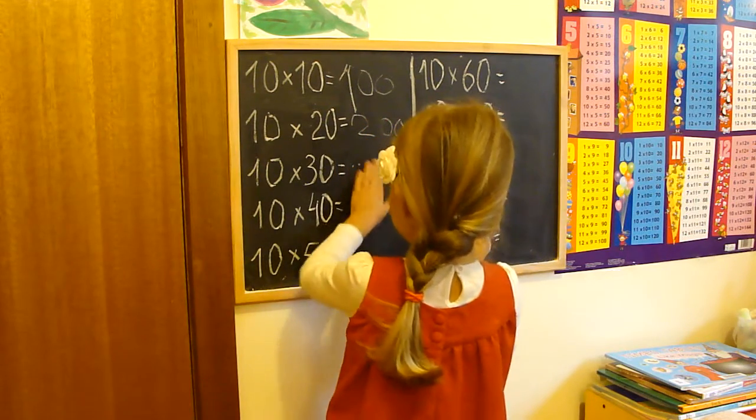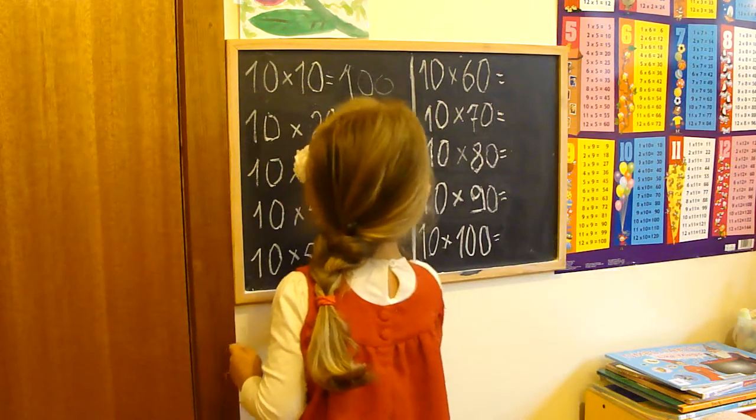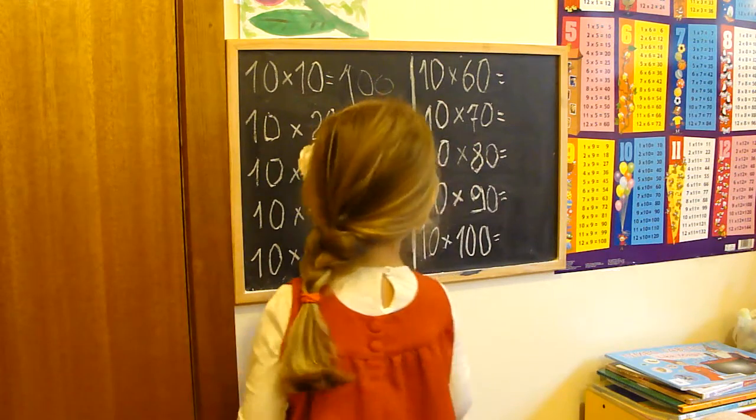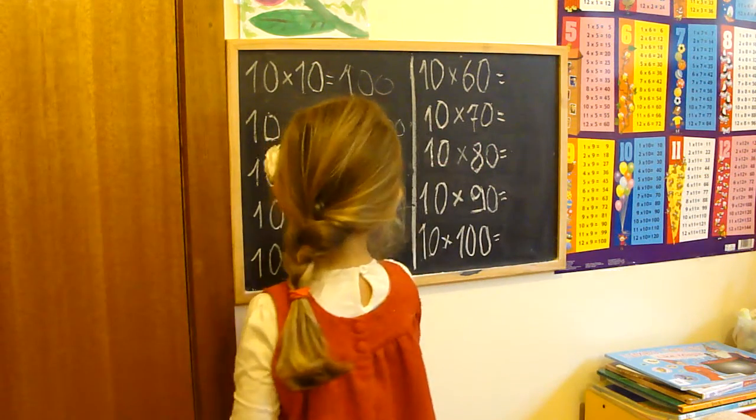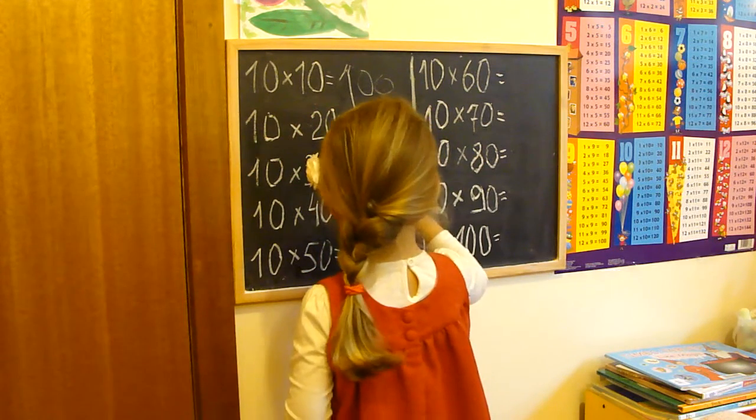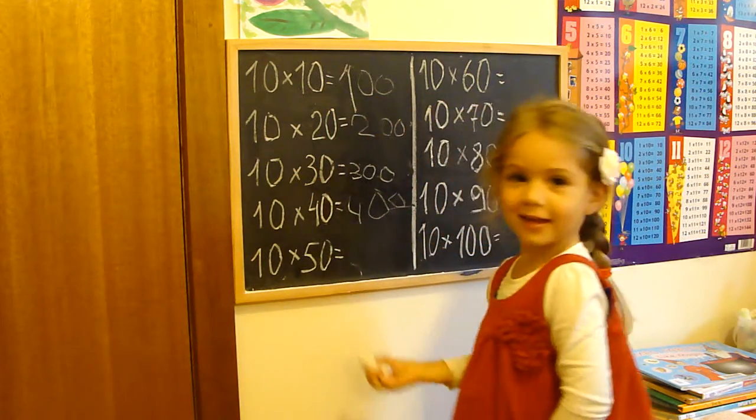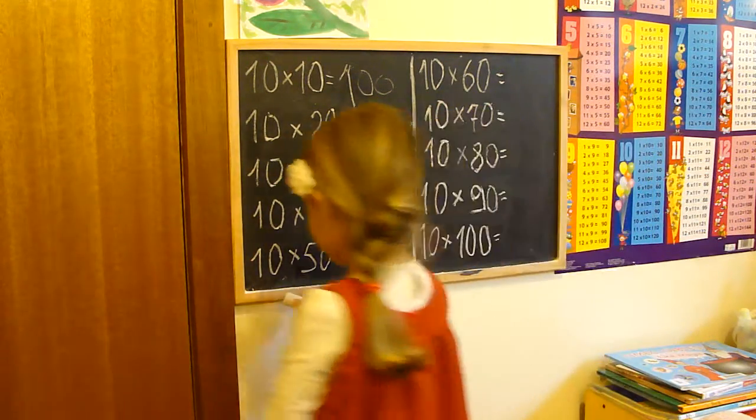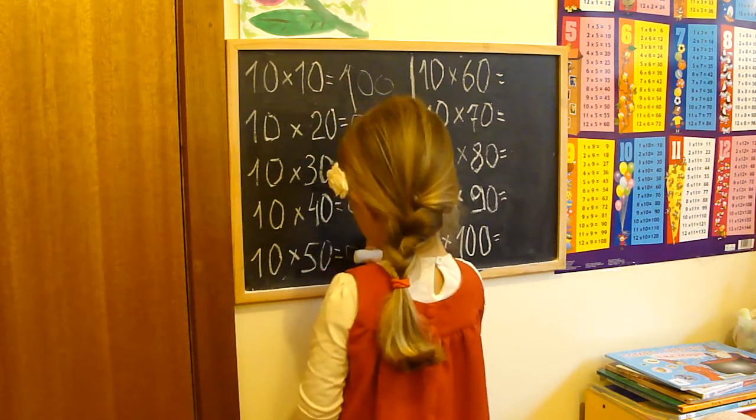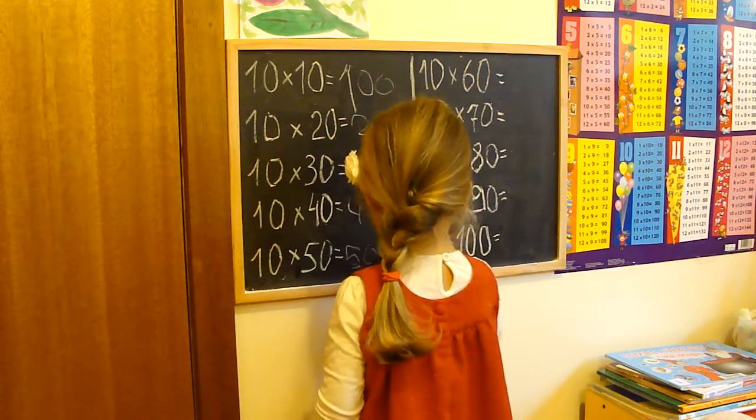It's too big. 10 times 40 is 400. Let me see. Yes, and next one. 10 times 50 is 500. Very good.